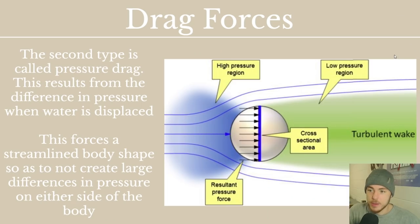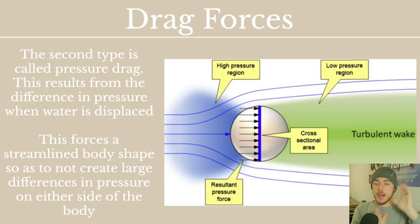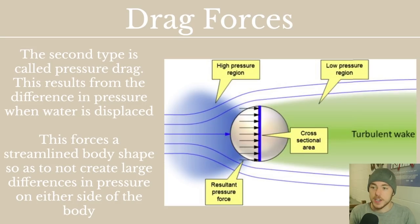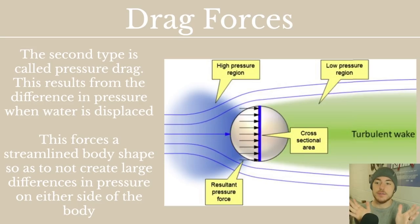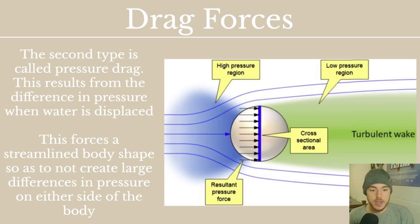The other force is called pressure drag, which is the difference in pressure when water is displaced. There will be high pressure in front of the fish as it moves through the water. Once it passes along and the water flows around it, there is lower pressure in the area behind the fish. That difference in pressure creates a force which acts against the fish. Basically, you want to not leave such a gap in water behind you, or it will create a pressure gradient that creates force against you. You want a streamlined, thin, long body shape so that the water pressure difference is not acting against you.